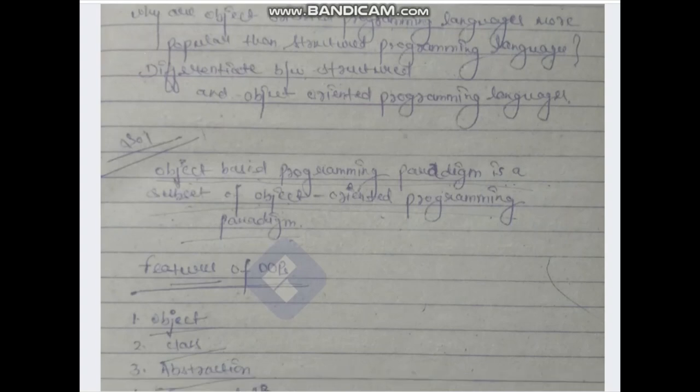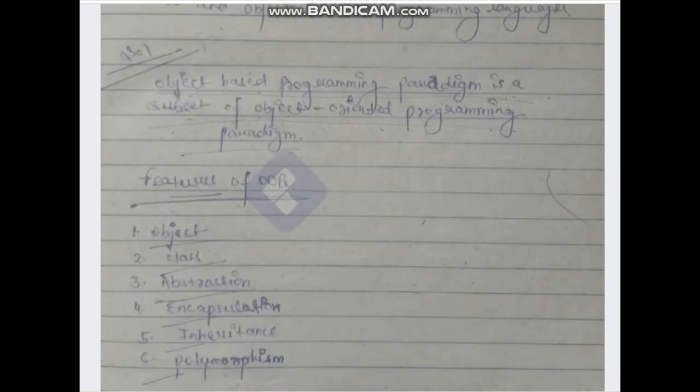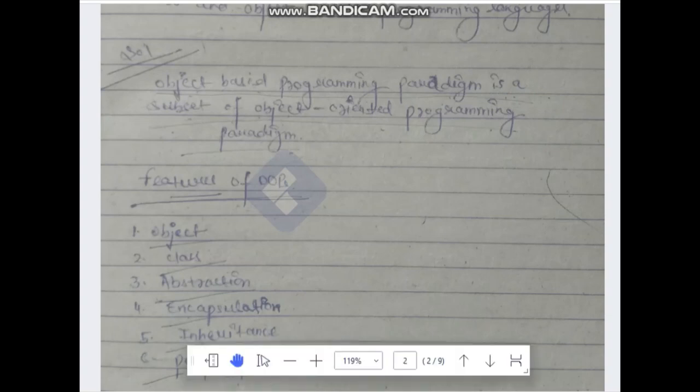The difference between structured programming and object-oriented programming is also an important topic — don't miss out. I have already uploaded answers for BCS023 and BCS040, so you can go and check the description box. All notes of this video are also in the description box and you can download from there. The answer covers features of OOPs: objects, classes, abstraction, encapsulation, and inheritance — all definitions and examples.